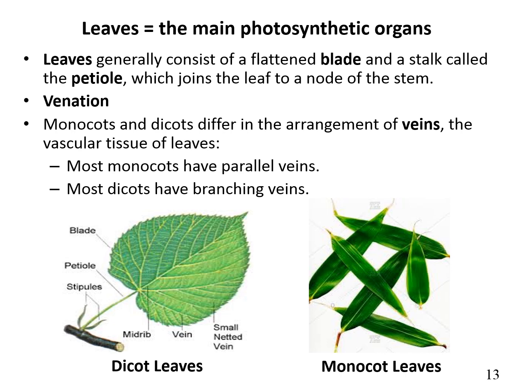Leaves are the main photosynthetic part of the plant. They absorb light and help in the exchange of gases through the stomata. The leaf is usually flattened. The main parts of a leaf include the leaf base, petiole, and lamina, also called the blade. Leaves grow at the node and bear a bud at the axil. The arrangement of veins and veinlets in the leaf is called venation. In most monocots, the vascular tissue has parallel veins, while in dicots it has a branching pattern.